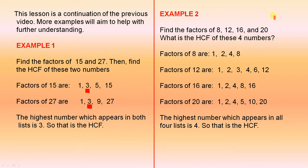Example 2. Find the factors of 8, 12, 16 and 20. What is the highest common factor of these four numbers? So the factors of 8 are these numbers. Factors of 12, the factors of 16 and the factors of 20. The highest number which appears in all four lists is 4, so that is the highest common factor.